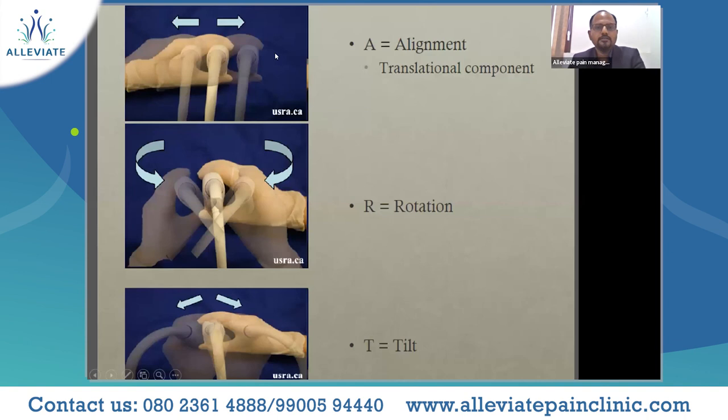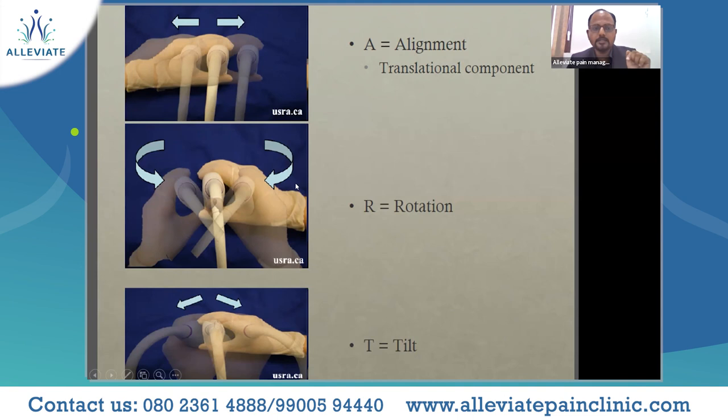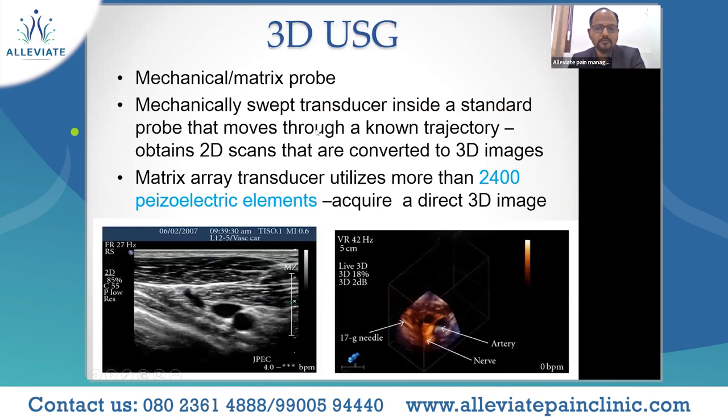Alignment is translating the probe from one part to another. Rotation is rotating from a particular point. Tilt is tilting from that point. Pressure is also very important — you could be occluding certain vessels with too much pressure and misinterpreting the image. All four elements of PART are essential for proper probe manipulation.